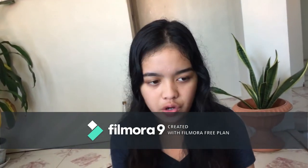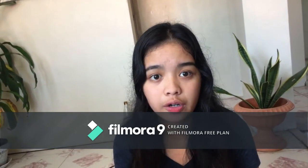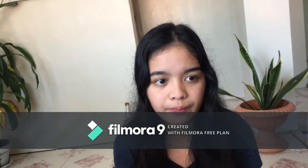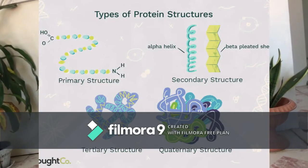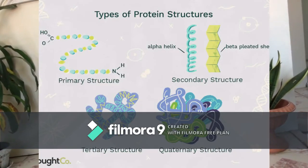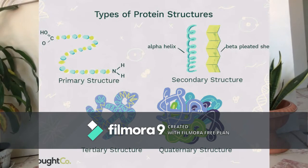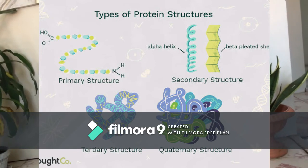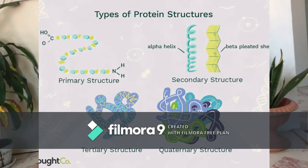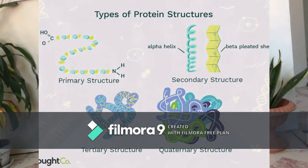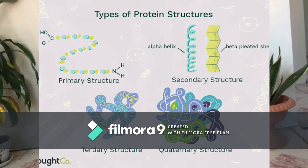Here are the structures of proteins. First is the primary structure, second is secondary structures, third is tertiary structures, and fourth is quaternary structures.